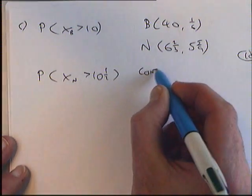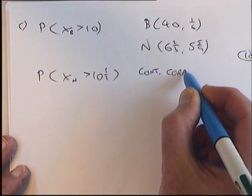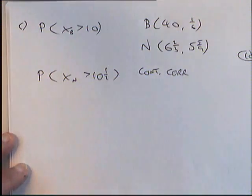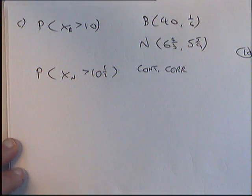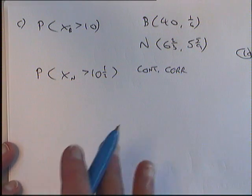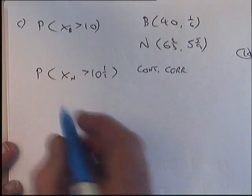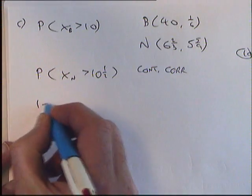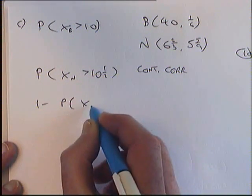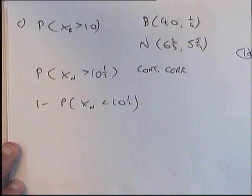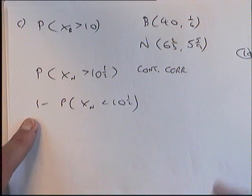That's the use of the continuity correction coming in. Once you change it to normal, you've got to have the half there. If you're using a graphics calculator, you can go from there, and instead of using the P function, you'll be using the R function. I'm going to turn it round into a less than 10.5, because the tables are less than, so I'm going to put a 1 minus in here.